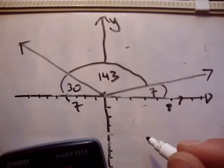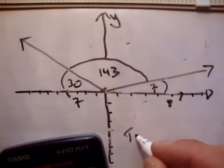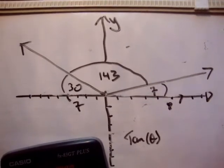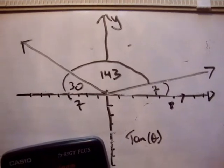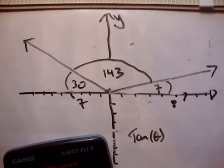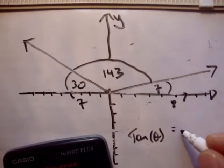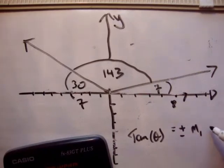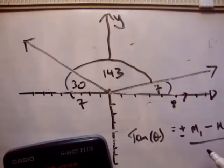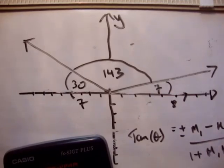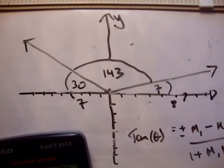But they're asking us to use a formula. The formula given in the book says: tan theta equals plus or minus (M1 minus M2) over (1 plus the product of M1 and M2). I'm going to assume that M1 and M2 are the slopes — the rate of change of one with respect to the other.